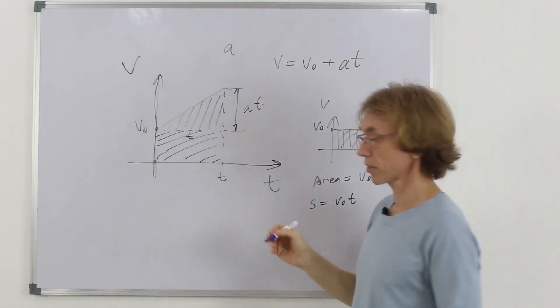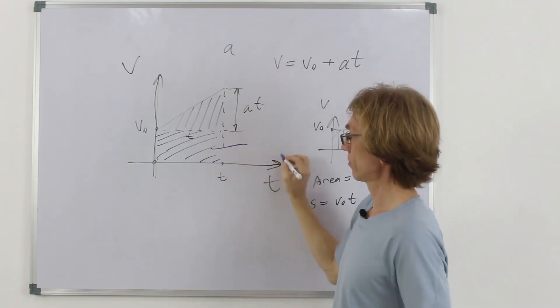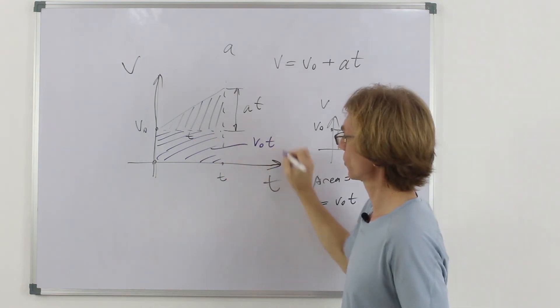Let's calculate them separately. What is the area of here? Obviously, just v0 t.